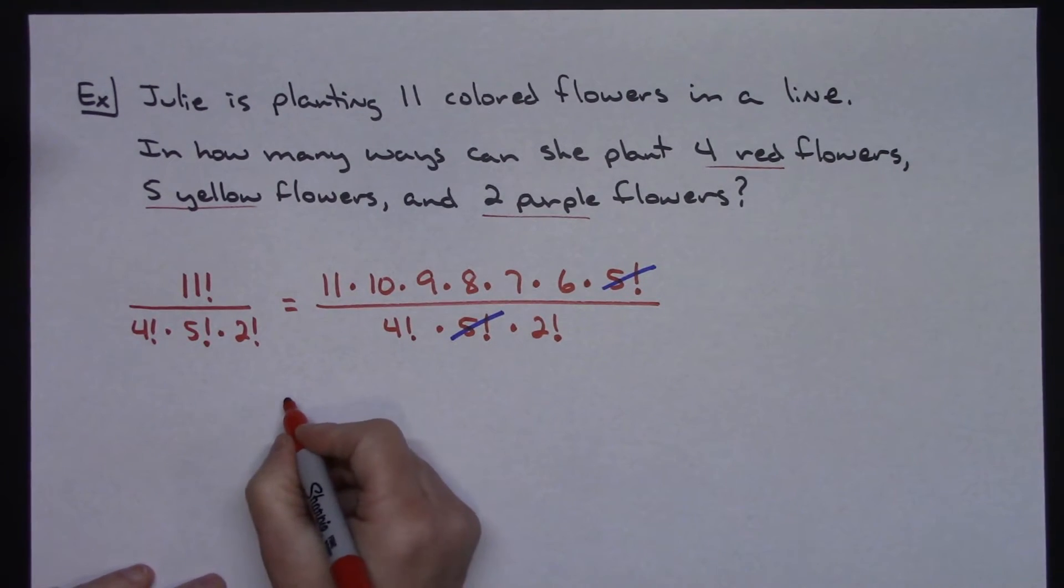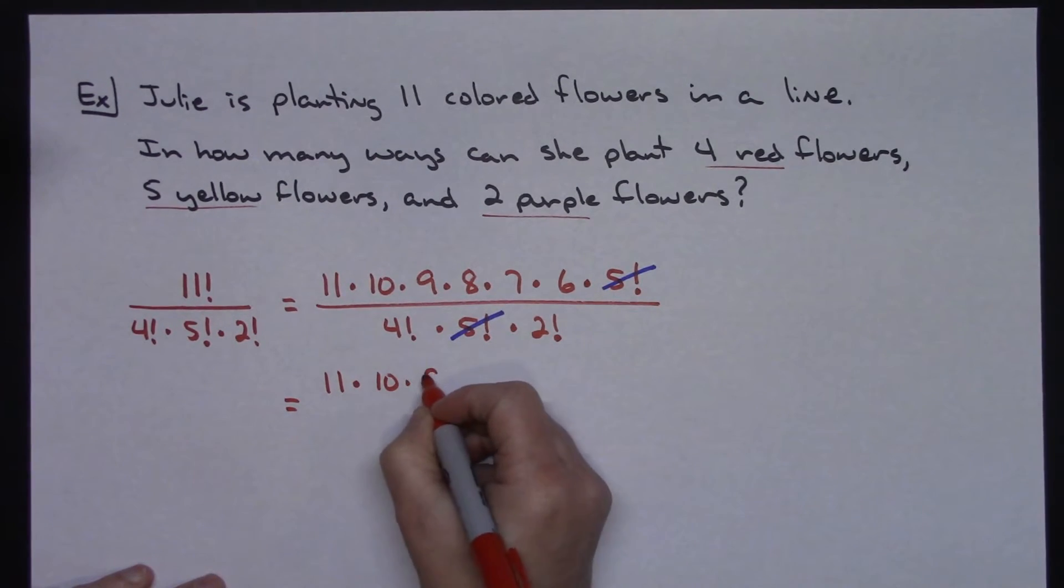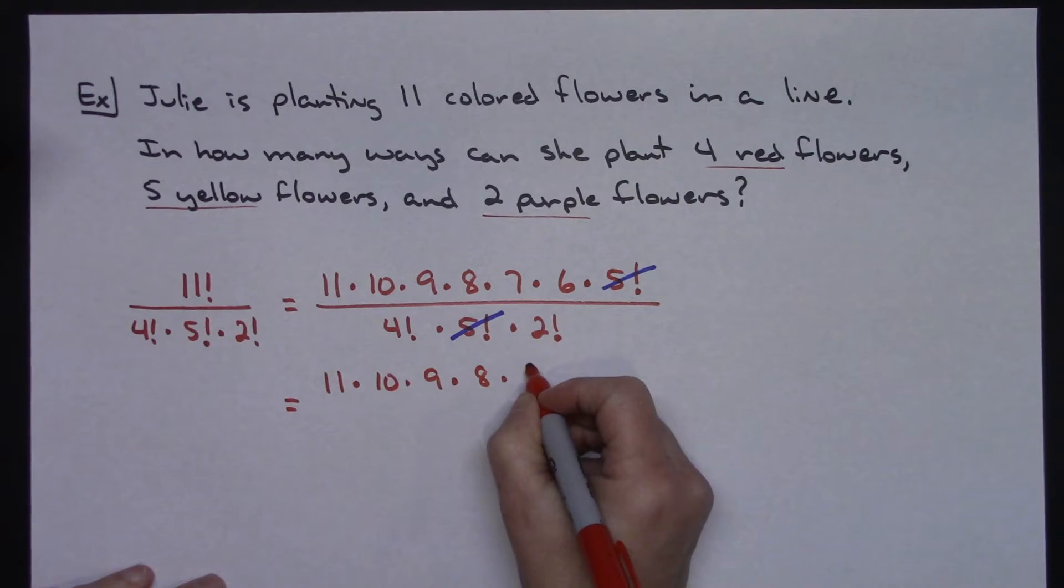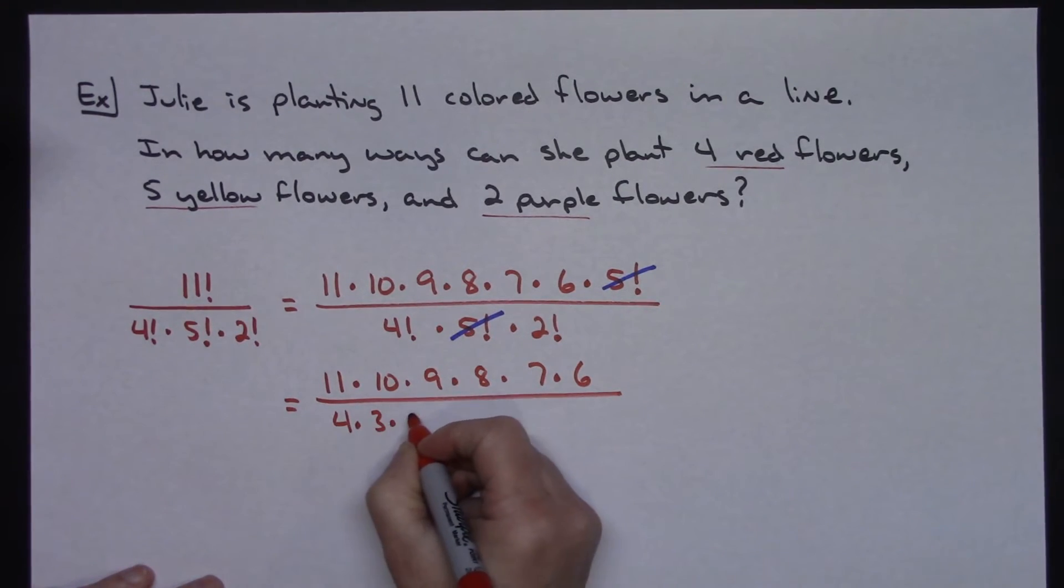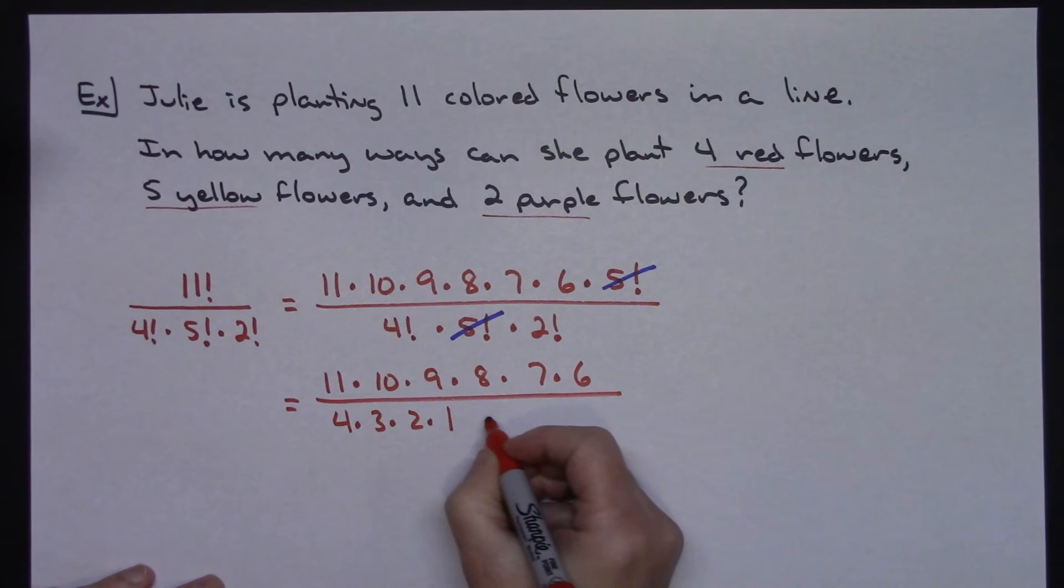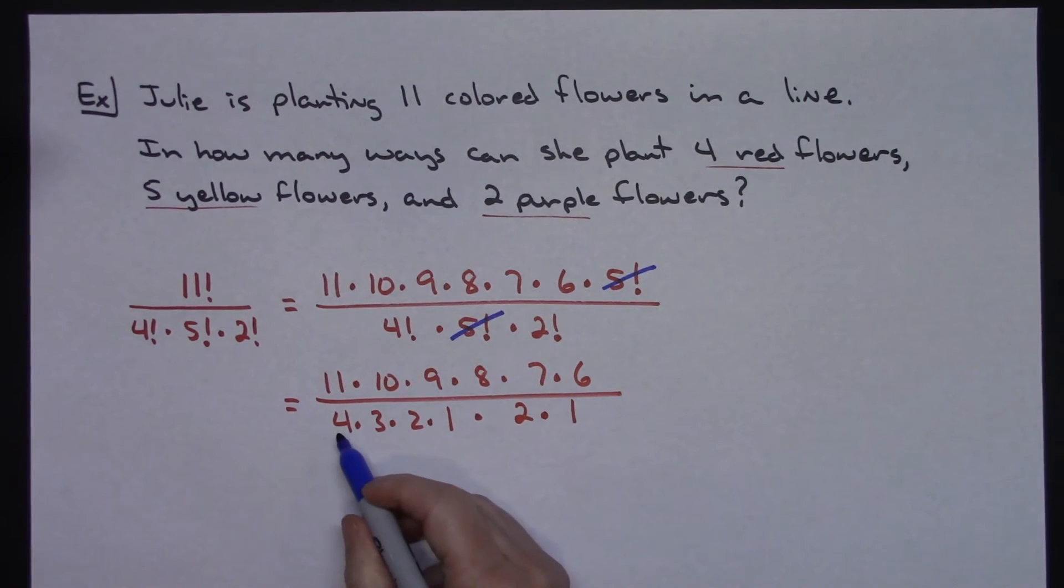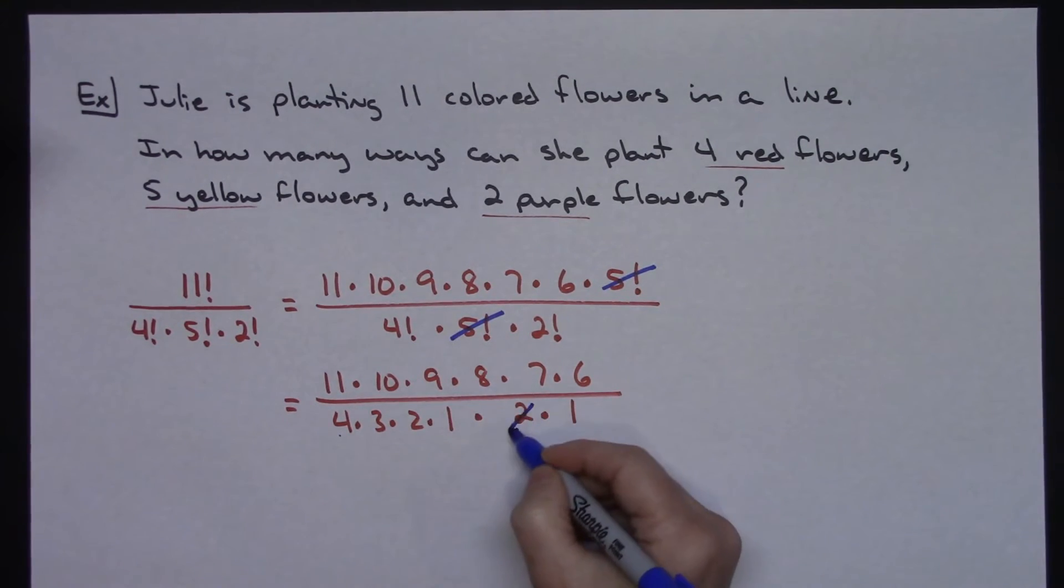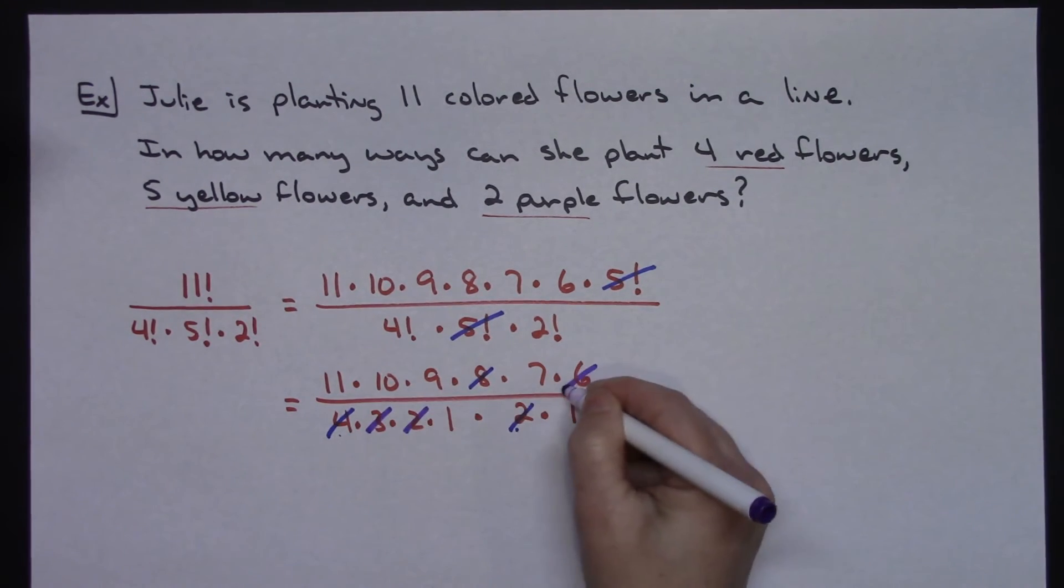Now let's go ahead and break down the denominator there a little bit. 11 times 10 times 9 times 8 times 7 times 6 across the top. And the 4 factorial is going to be a 4 times 3 times 2 times 1, and the 2 factorial then will be the 2 times 1. So let's do some crossing out here. 4 times 2 is going to give me the 8, so I can cross all of those out. And 3 times 2 is going to give me 6, so I can cross all 3 of those out as well.